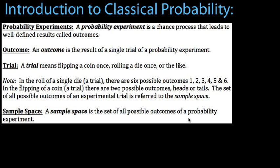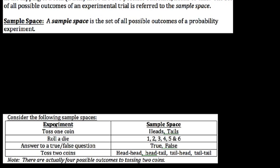The sample space is the set of all possible outcomes for a probability experiment. For example: toss a coin — heads or tails, two possible outcomes; roll a die — 1 through 6; answer a true-false question — true or false. When you flip two coins, there are actually four possible outcomes: heads-heads, heads-tails, tails-heads, or tails-tails.